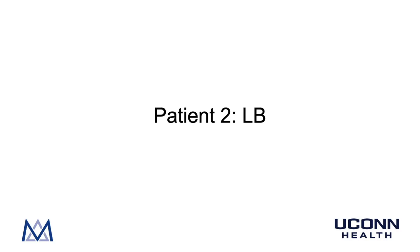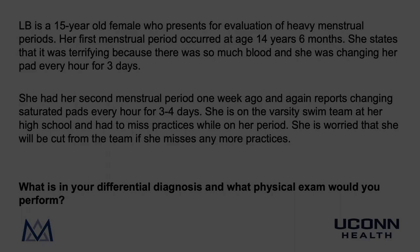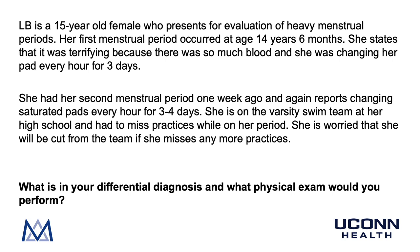In this video, we will follow along with our patient, LB. LB is a 15-year-old female who presents for evaluation of heavy menstrual periods. Her first menstrual period occurred at age 14 years, 6 months. She states that it was terrifying because there was so much blood and she was changing her pad every hour for three days. She had her second menstrual period one week ago and again reports changing saturated pads every hour for three to four days. She is on the varsity swim team at her high school and had to miss practices while on her period.